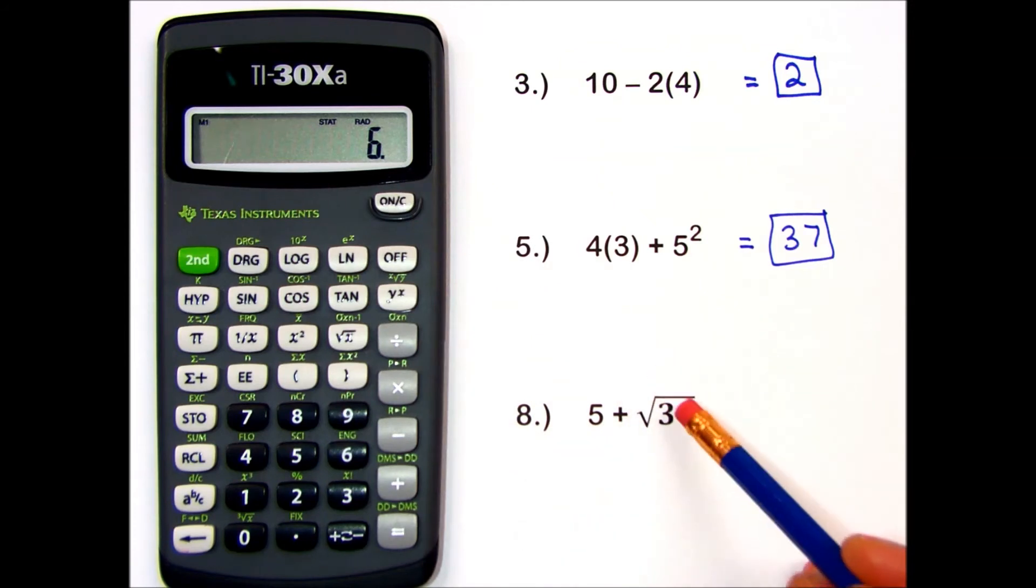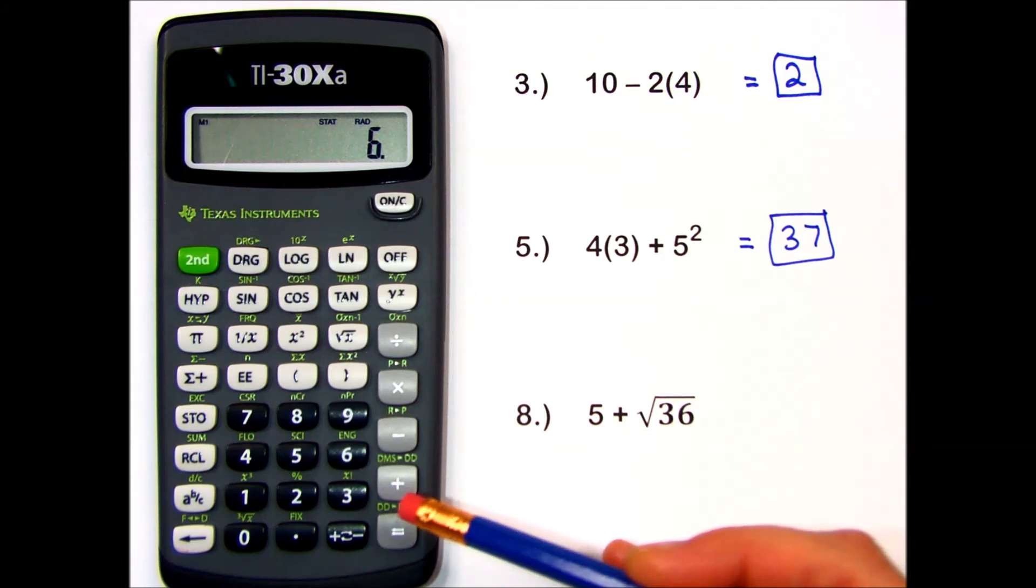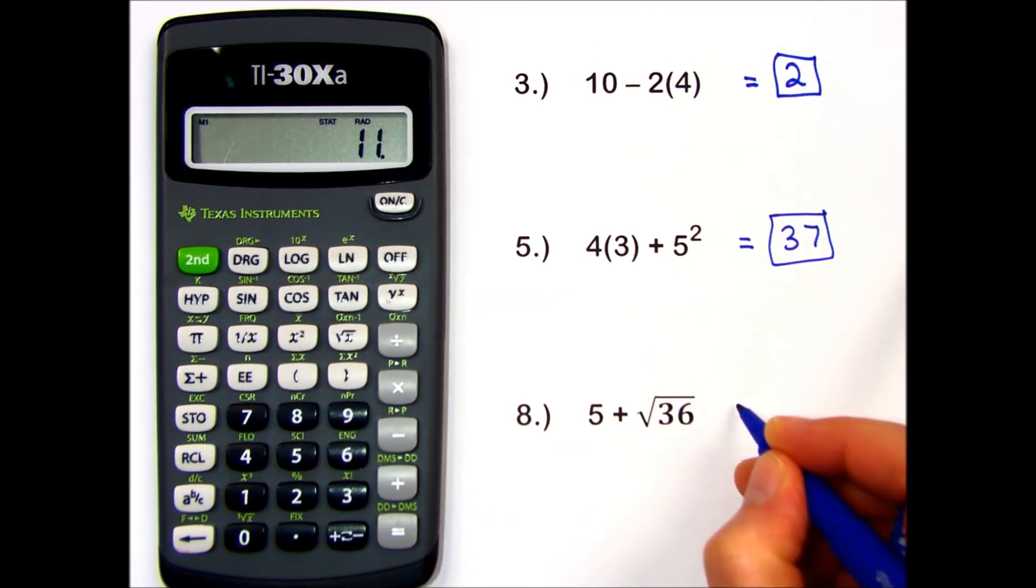It's displaying the answer to this part and it's waiting until you press equals to finish with the other operation. 5 plus the 6. My final answer is 11.